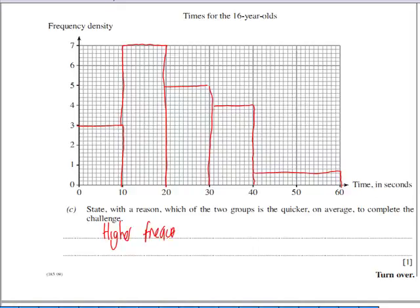A higher frequency of 16 year olds complete the test in shorter time. And you could prove that by either calculating the number of students between say 0 and 30 seconds in both groups to back up this statement.